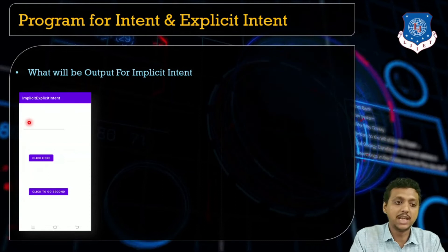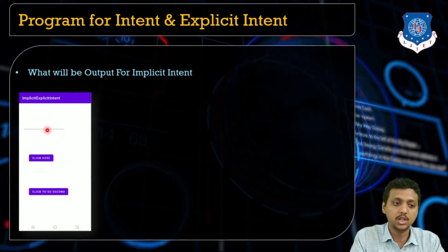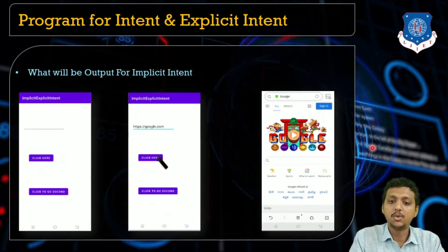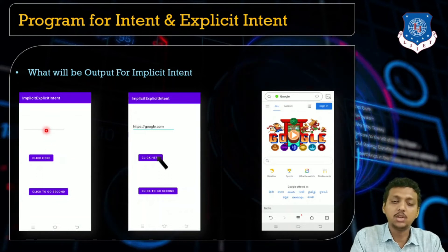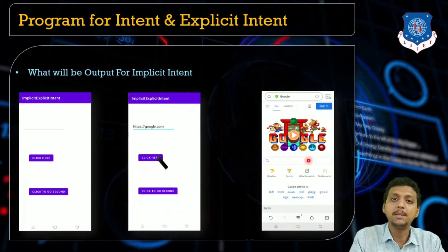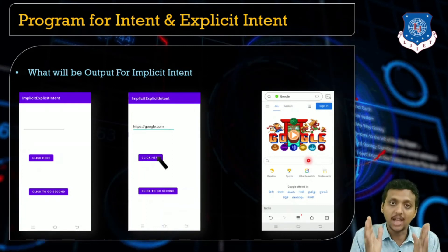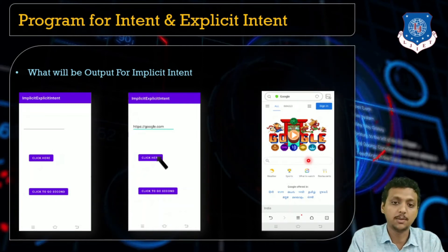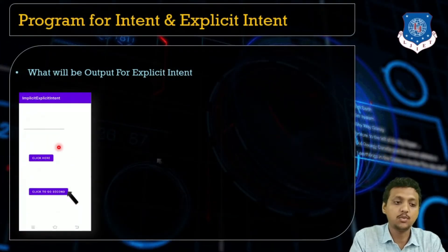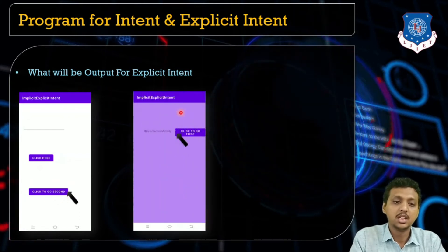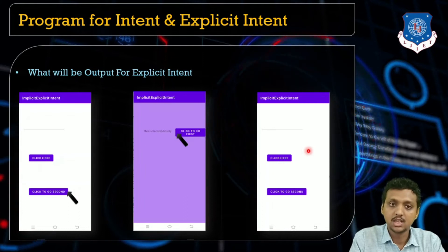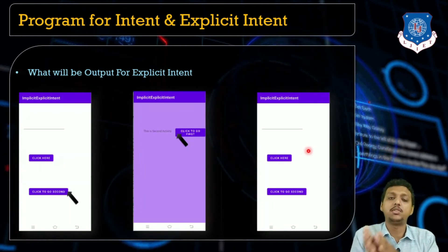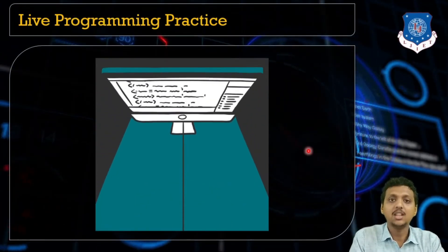The program output will be: you type a URL, press the click button, and the web page opens — that is the implicit intent. For explicit intent, clicking 'Go to Second' button navigates from the first activity to the second activity, which also has a 'Go to First' button to navigate back. Both implicit and explicit intents are demonstrated in a single program.